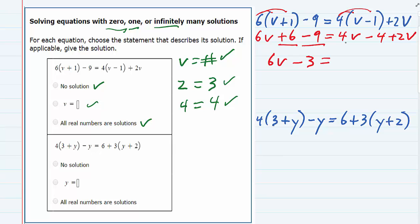On the right hand side, I have two like terms there as well. The four v and the two v, even though they're not beside each other, they're on the same side of the equation. So we can add those together and get six v minus four, just bringing down the minus four.